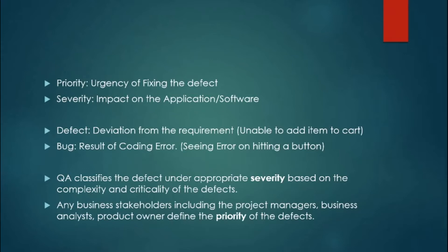QA is the one who decides the severity of a defect, but priority is generally decided by business stakeholders — the project manager, business analyst, and product owner. Priority and severity are important because they tell the developer which defect to pick first. Higher the priority, the developer will pick and fix that defect first.